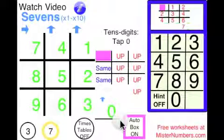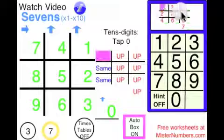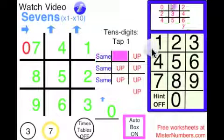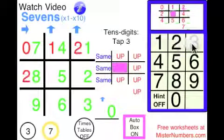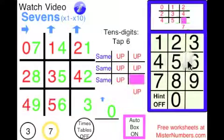Then put the tens digit in front starting at zero with the same up up pattern.